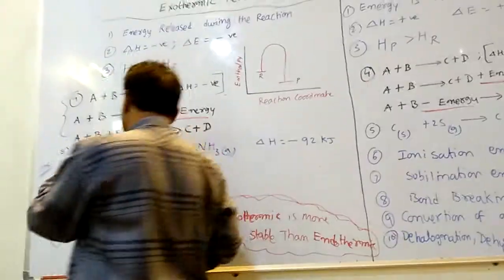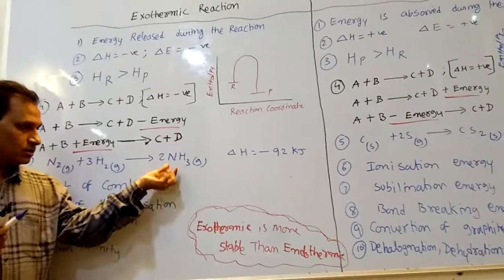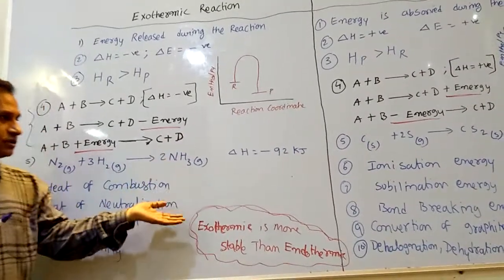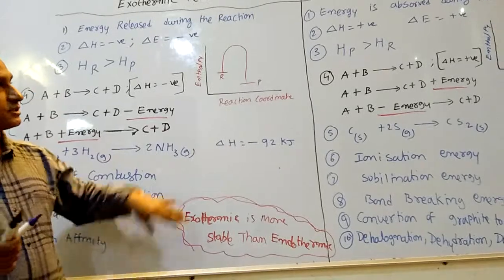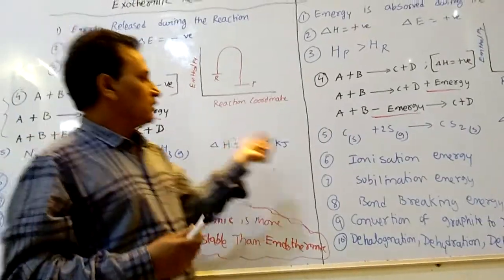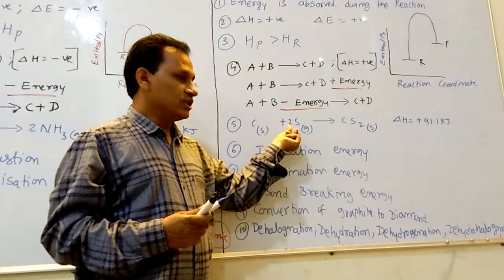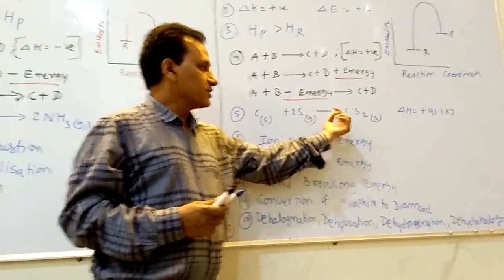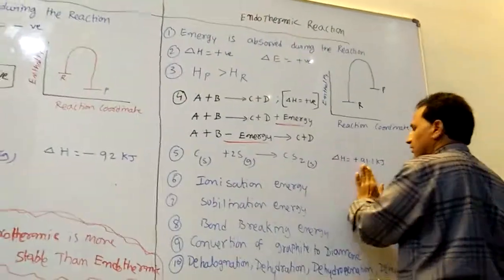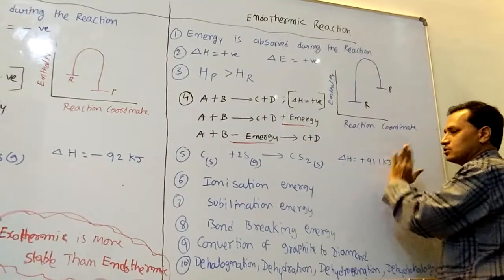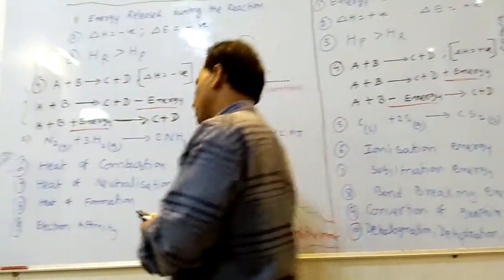For example: nitrogen gas combined with hydrogen gas to form NH₃, releasing minus 92 kilojoules — that is exothermic. Solid graphite combined with sulfur forms CS₂ gas, absorbing plus 91.1 kilojoules — that is endothermic. Plus means endothermic, minus means exothermic.